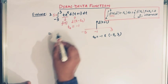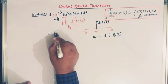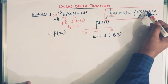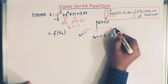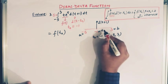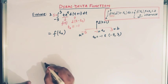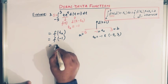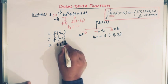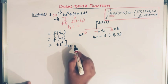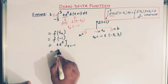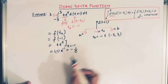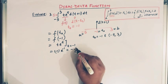According to the definition, the value of this integral equals f(t₀) = f(-1). The function f(t) = t·eᵗ evaluated at t = -1 gives (-1)·e^(-1) = -1/e. Therefore the value of this integral is -1/e.